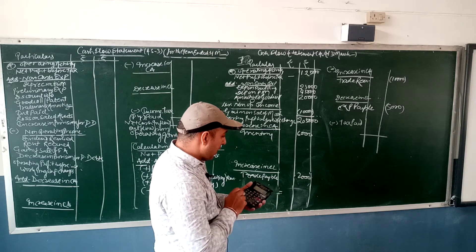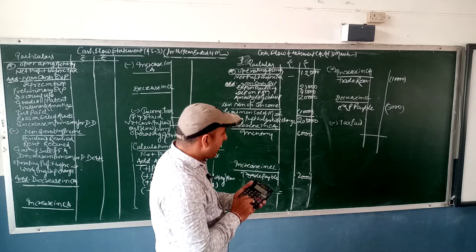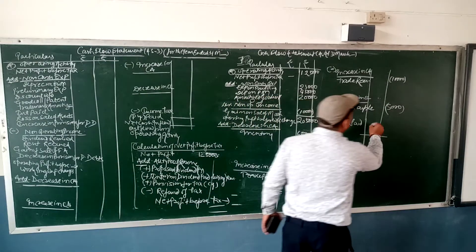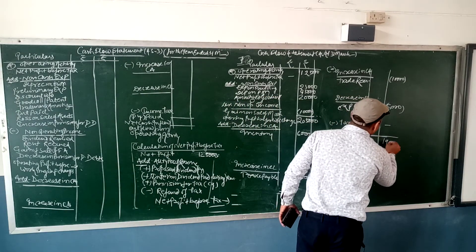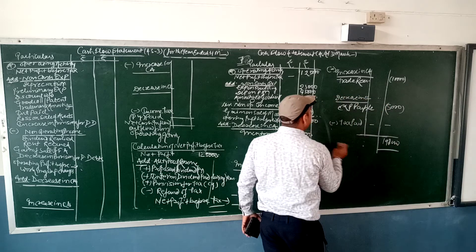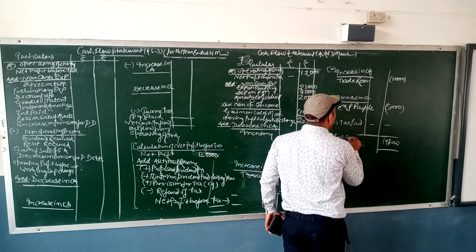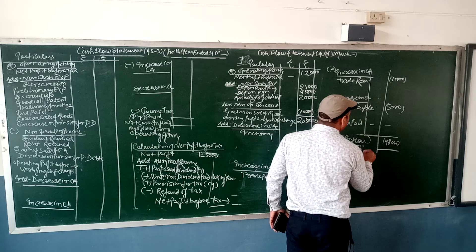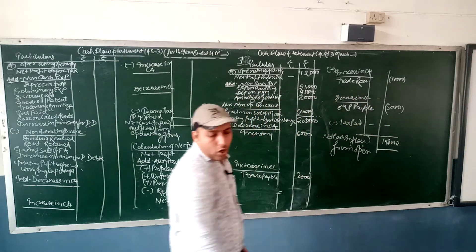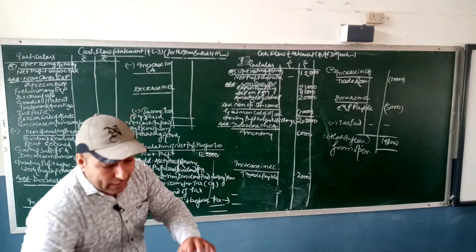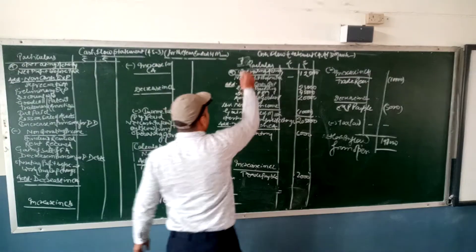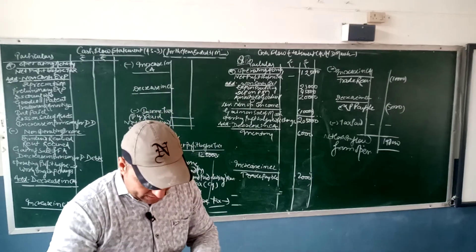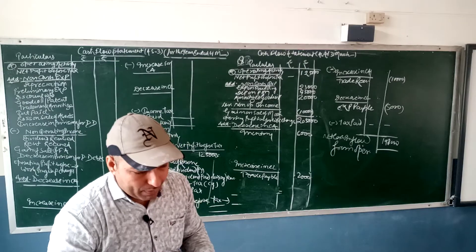Add the plus items: plus 6,000, plus 2,000, minus 10,000, minus 5,000. So the answer comes to 1,98,000. Since the figure is positive, we write net cash inflow from operating activity. If it were negative, it would be outflow. So question number 7 and question number 8 are both complete — write them down. Now we move to question number 9.